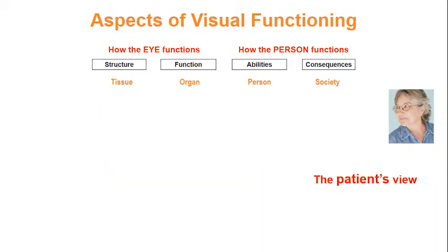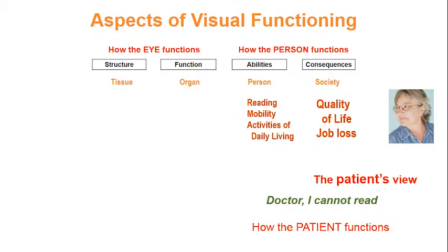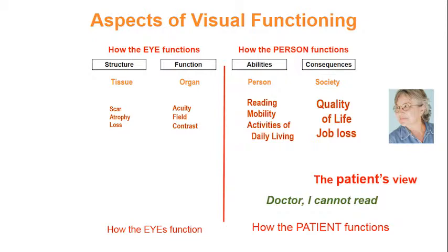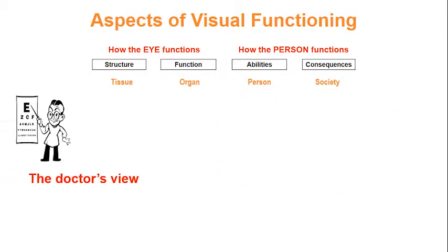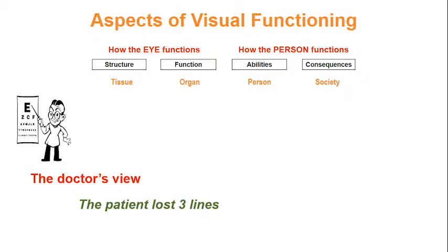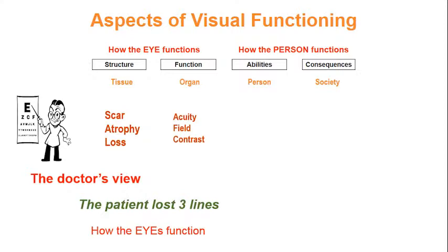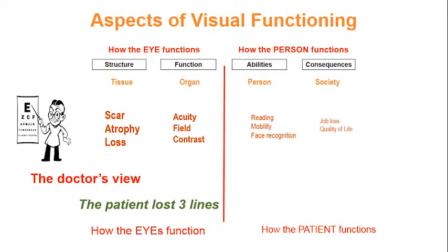Let us start with the patient's point of view. The patient comes in with a very practical complaint: 'Doctor, I cannot read.' Her primary concern is on how she can function, on her quality of life and on daily living skills. For her, the details of how her eyes function are of secondary interest. Compare that with a doctor's point of view — he immediately translates the patient's complaint to a statement about the eyes: 'The patient has lost three lines.' His professional interest is on how the eyes function; how the person functions is of secondary interest.